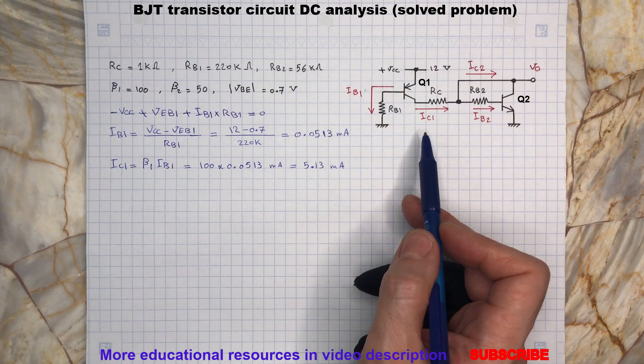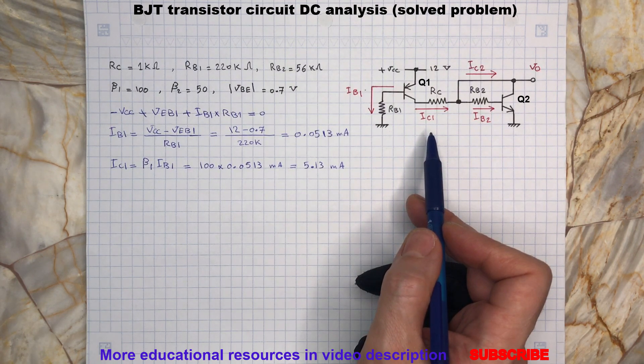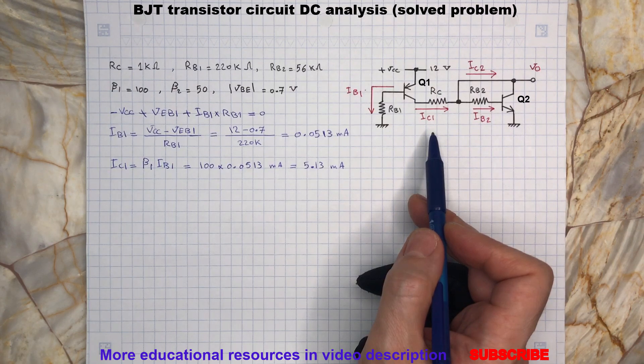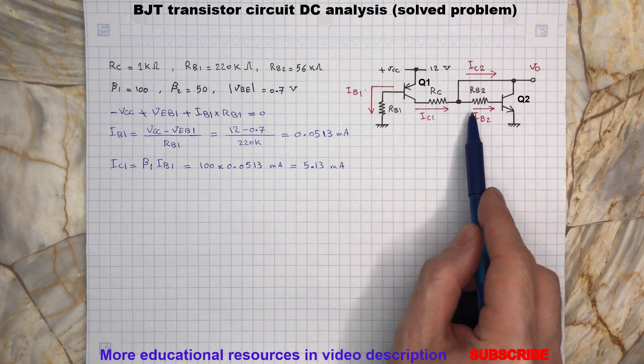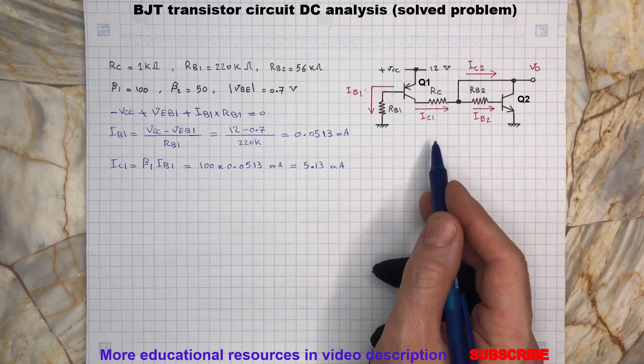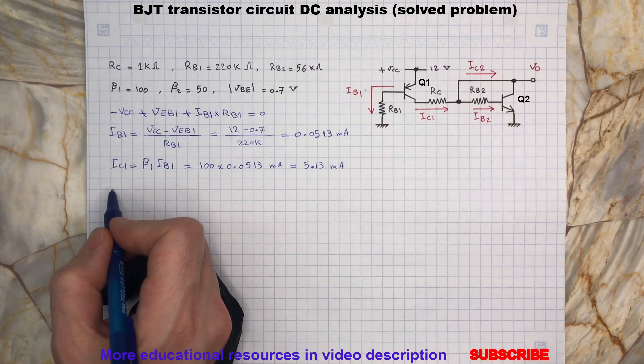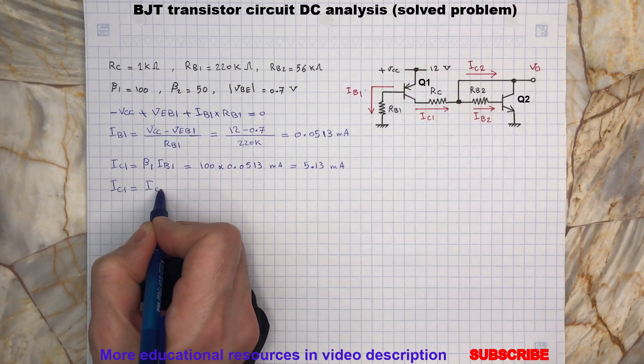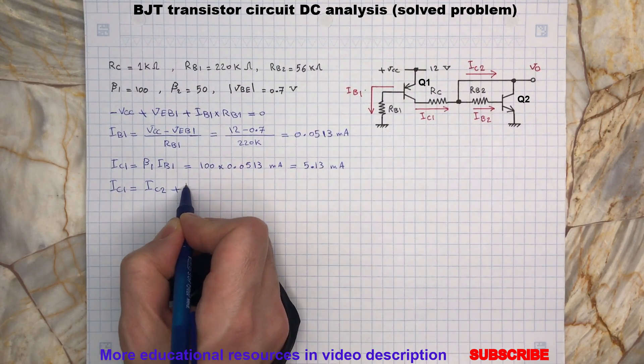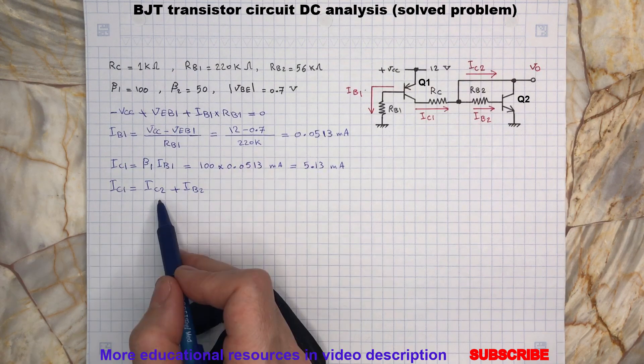Now by looking at the circuit we can clearly see that part of IC1 current will go to the base of Q2 and the rest to its collector. So we can write, and again we can write the collector current in terms of the base current as follows.